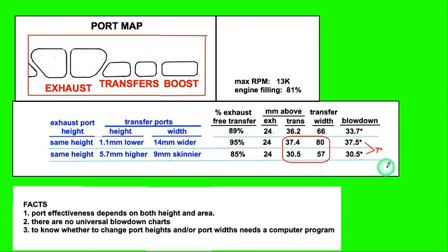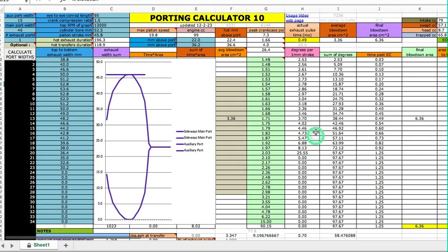So anyway, these are the facts: port effectiveness depends on both height and area of the port. There are no universal blowdown charts due to the great diversity of engine designs. And to know whether or not to change port heights and/or port widths, you need a computer program, which is what I sell.